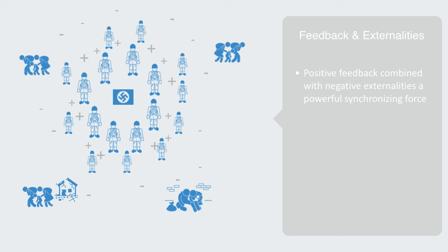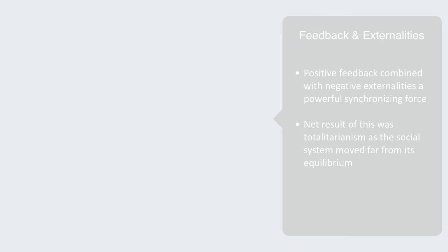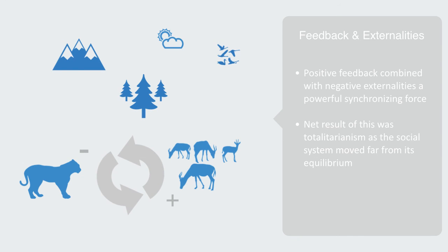The net result of this was totalitarianism as the social system moved far from its equilibrium, ultimately resulting in a phase transition as it collapsed into a post-war economic and social crisis. In contrast to this, negative feedback combined with positive externalities will create a strong mechanism for maintaining equilibrium through endorsing a diverse set of desynchronized states within the system. This will clearly add to a system's robustness and long-term sustainability, with mature ecosystems exemplifying this.